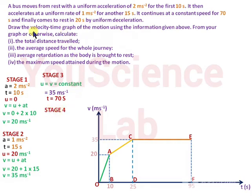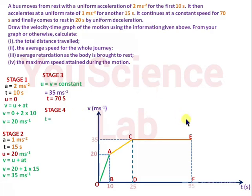In the fourth and final stage, the car was brought to rest in 20 seconds by uniform deceleration. Draw a straight line EG to represent the deceleration of the car from 35 meters per second to 0 meters per second in 20 seconds.